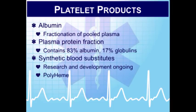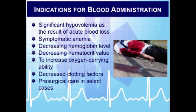Plasma protein fraction contains a lot of albumin and some globulins, used like albumin for volume expansion in hypovolemic patients with low protein levels — particularly shock and burn patients. Synthetic blood substitutes have been studied for many years; polyheme is one example. Advantages include room-temperature storage, long shelf life, and no need for type and cross-match, which would be ideal to avoid contamination and infection risks.